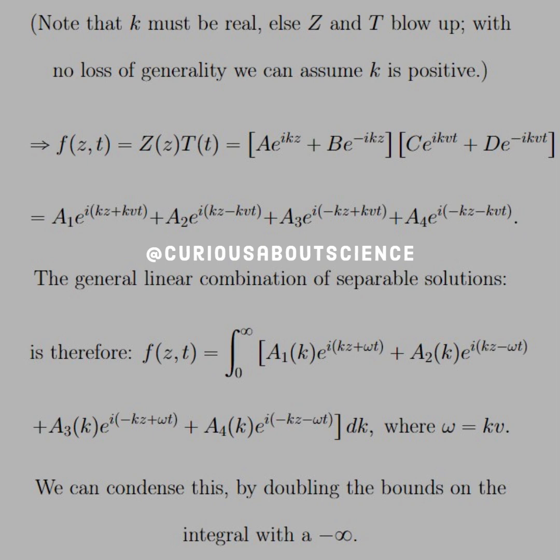So we say f(z,t) = Z(z)T(t). We found the solution forms, and now we just multiply them across and distribute them. What we're left with after a little bit of renaming is A₁ with the a and c term, A₂ with the a and d term, A₃ with the b and c term, and A₄ with the b and d term.